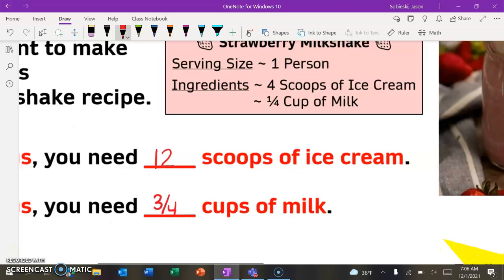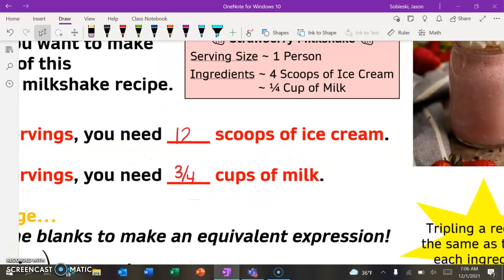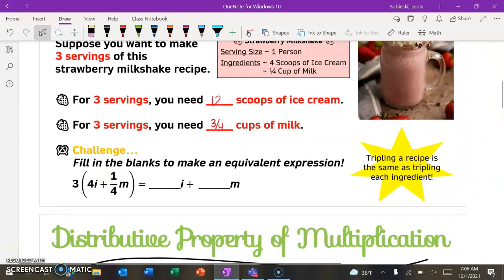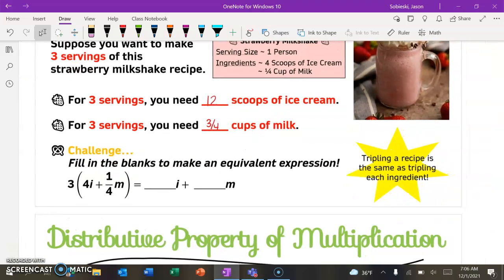So we could add, just like I was explaining, or you could multiply. Four scoops of ice cream times three people would get you 12. And then same thing, one-fourth cup of milk times three people would get you three-fourths. So it turns out that if we want to triple the entire recipe to make enough for three people, all we need to do is just triple each ingredient. And we're going to be able to take that idea and translate it to some more math problems.